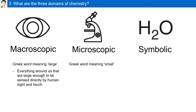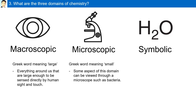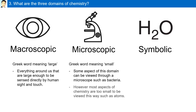Microscopic is from the Greek word meaning small. Some aspects of this domain can be viewed through a microscope, such as bacteria. However, most aspects of chemistry are too small to be viewed this way, such as atoms.